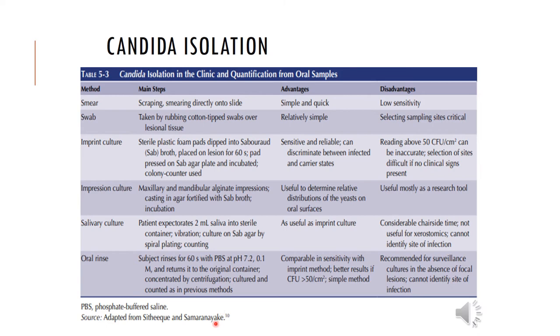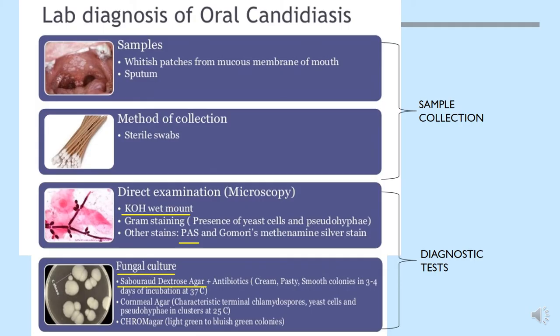Colony-forming units are assessed: anything above 50 — for example on an imprint culture — is a sign of candidal infection. To confirm the diagnosis in the lab, use sterile swabs to scrape off the whitish lesions in the oral cavity and send to the lab.